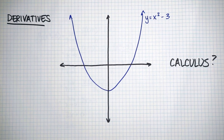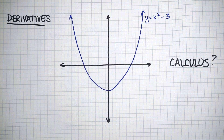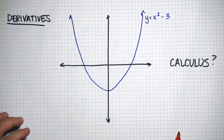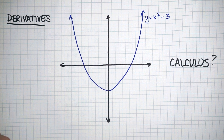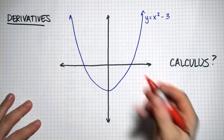Today the question we're going to answer is: what is a derivative, and basically what is calculus? So say we have a function x squared minus 3. We want to find the average rate of change and the instantaneous rate of change — that's sort of what we've been doing so far.